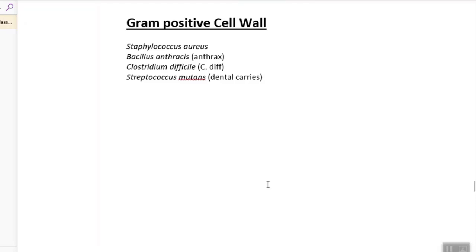In this next section, I'm going to tell you about the gram-positive and gram-negative cell wall. Starting with gram-positive, remember gram-positive bacteria will stain purple with the gram stain.